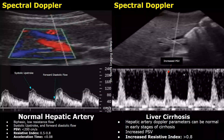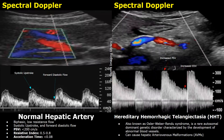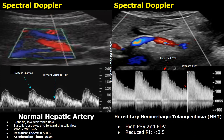The hepatic artery can also be evaluated in cases of cirrhosis, though portal vein evaluation is more significant and important. In early stages of liver cirrhosis, hepatic artery Doppler parameters can be normal, but in severe cases abnormalities may be present — the PSV and resistive index can be elevated. Hereditary hemorrhagic telangiectasia (HHT) is a rare autosomal dominant genetic disorder in which abnormal blood vessels develop. If the hepatic artery is affected, it may present as an arteriovenous malformation affecting the hepatic vasculature. In this case of HHT, we can see a very high PSV exceeding 300 cm per second, and the end-diastolic velocity is also very high — over 100 cm per second.